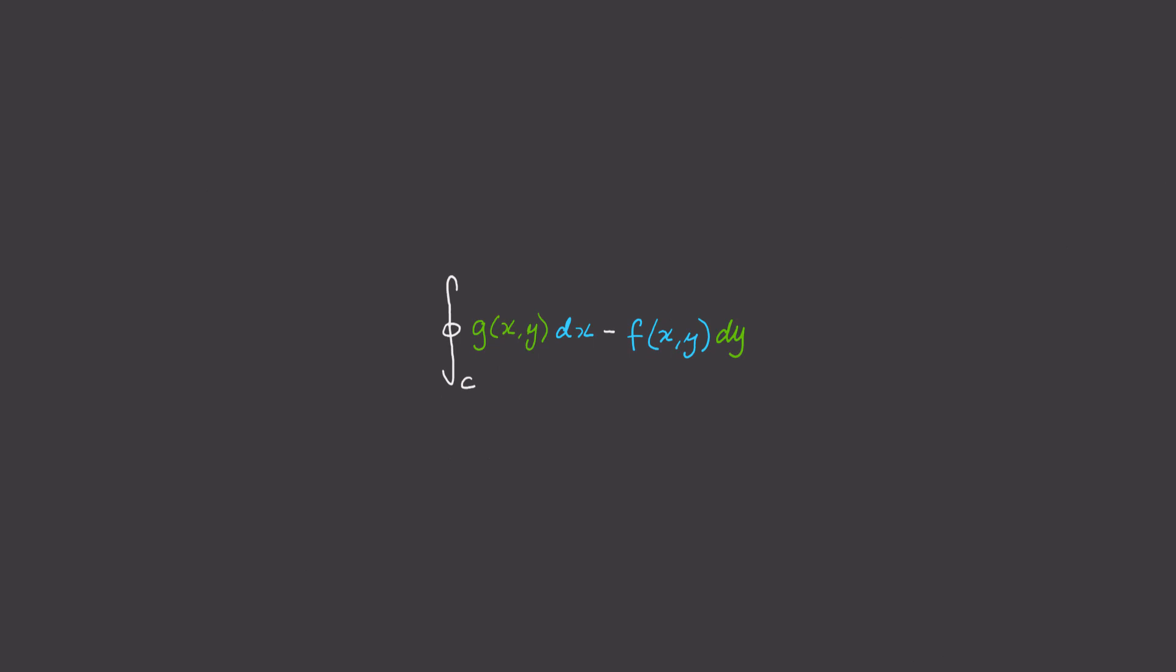Now this integral around this closed curve might look familiar to you if you're a physics or engineering student that studied fluid flow or electromagnetism before. This formula is also known as a flux integral and can be rewritten as the vector fg dot n dl. And it represents the net flow across the closed curve c. Now if you aren't familiar with this physics formula, don't worry, that's not the intention of this video.